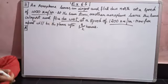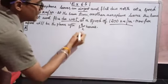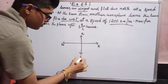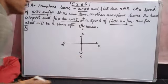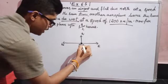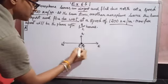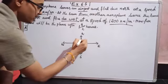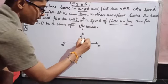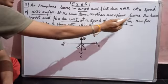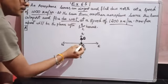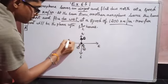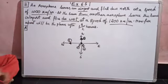Let me draw the directions — east, west, north, and south. Assume both planes start from the same point. Plane one is going in the north direction, and plane two is going in the west direction. The initial point of the two airplanes is the same.